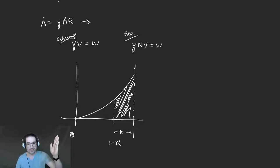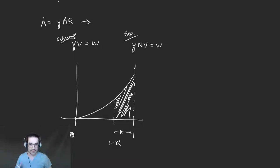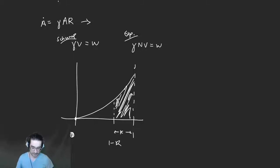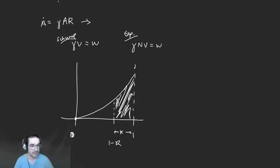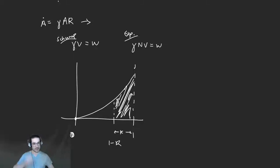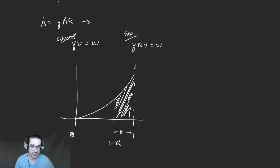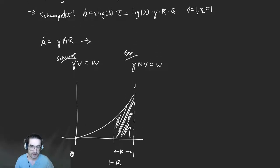By assuming a functional form for this curve you control the concavity of that function — that's basically eta. That's a common way to micro-found an eta less than one. I had been meaning to talk about eta not being one, so let me use this opportunity. Eta less than one — forget about the microfounding for a second, just say that's how it is.